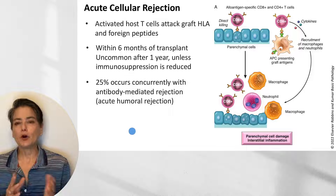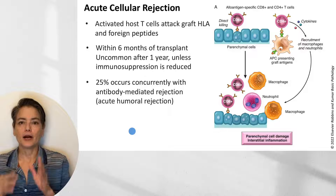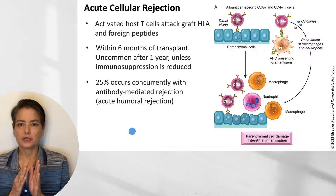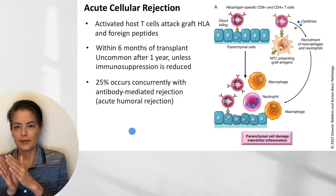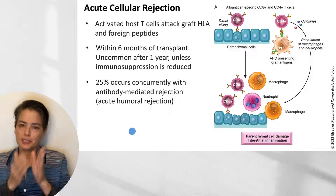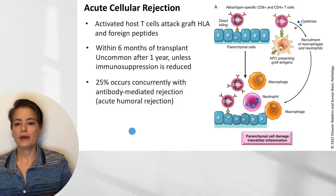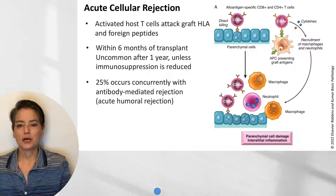At this point in time, we don't have separate pharmacologic agents where we distinguish between acute cellular and acute humoral rejection for treatment — we increase immunosuppression for both. That distinction in treatment may evolve over time.